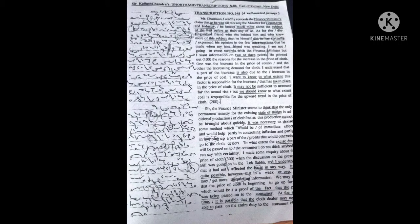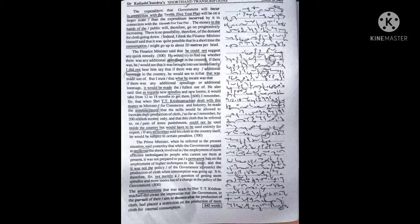At the same time, it is possible that the cloth dealer may not be able to pass on the entire duty to the consumer. The expenditure that government will incur in connection with the 12th five-year plan will be on a larger scale than the expenditure incurred by it in connection with the 11th five-year plan. The money in the hands of the public will therefore go on progressively increasing.